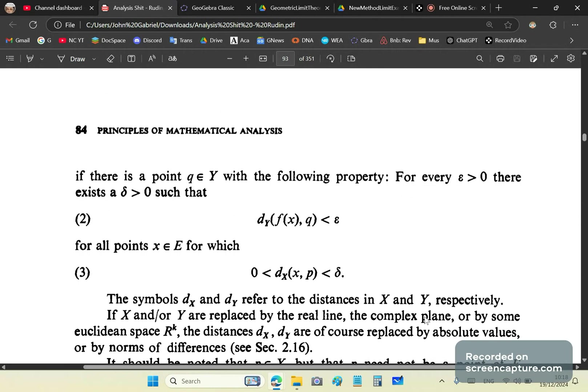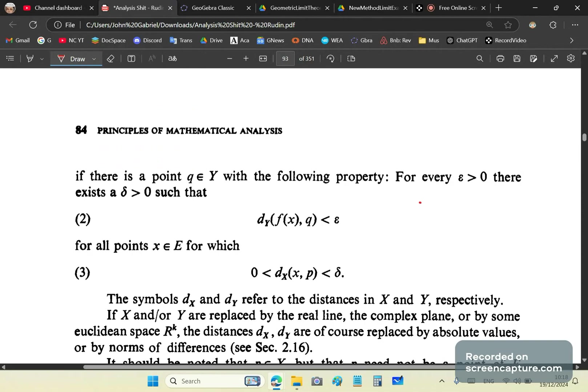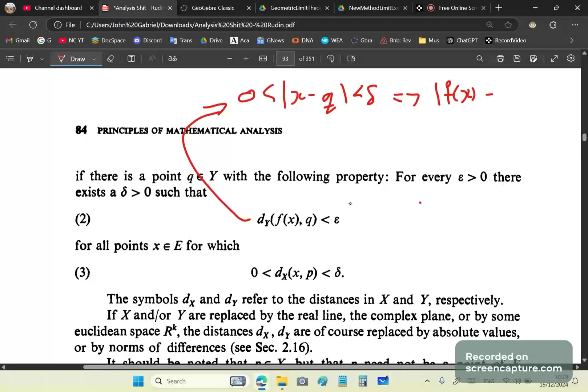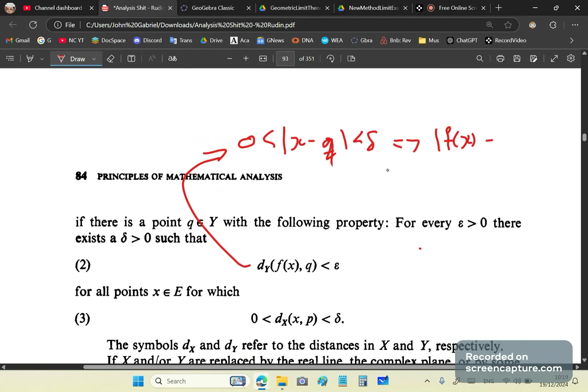If we look at this carefully, this morphed into the following definition. This became something like X minus P less than delta, and F of X minus Q less than epsilon. This is where this garbage came from.